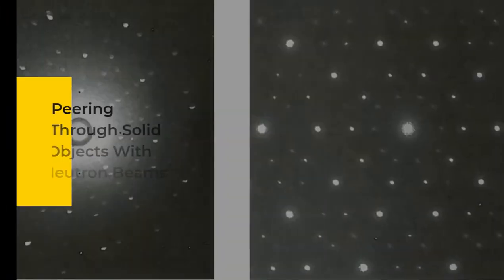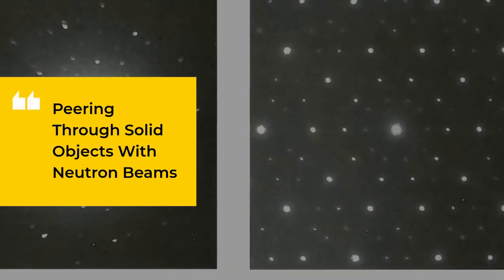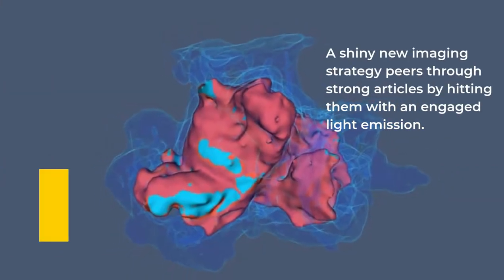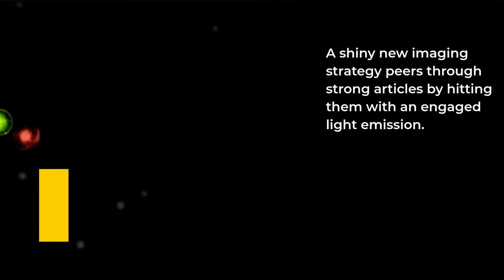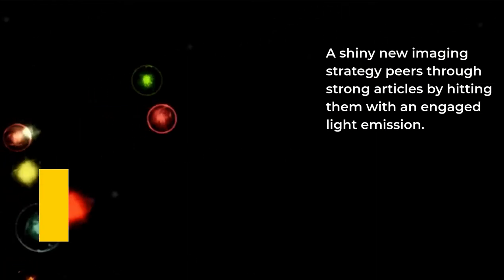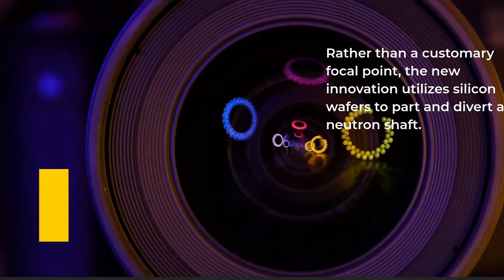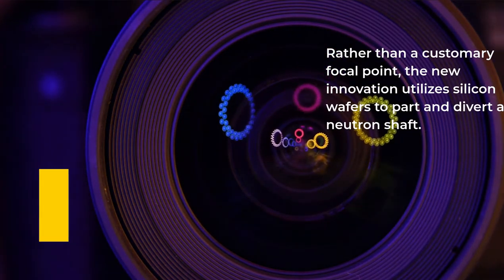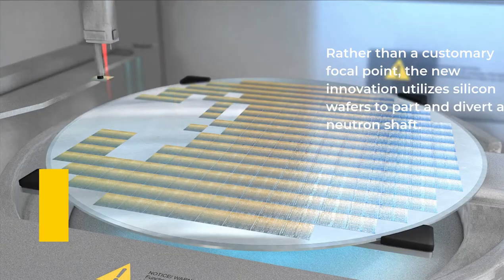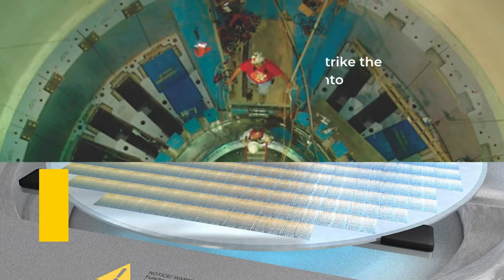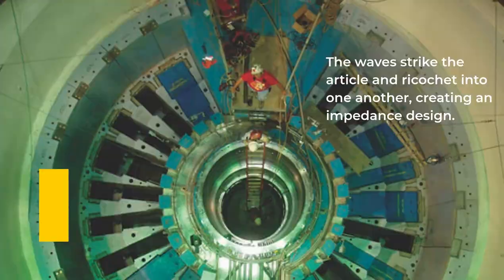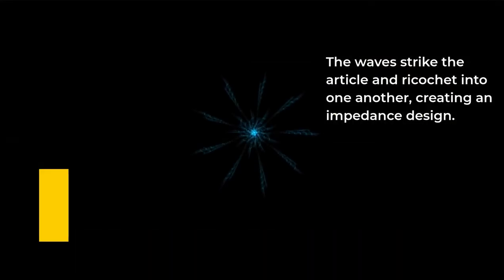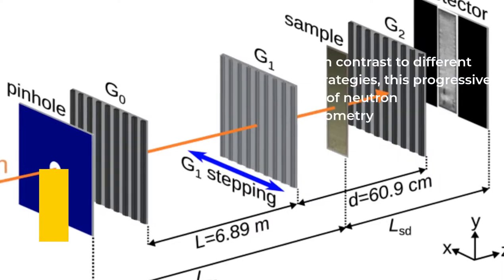8. Peering Through Solid Objects With Neutron Beams. A brand new imaging strategy peers through solid objects by hitting them with a focused light beam. Rather than a traditional lens, the new technology uses silicon wafers to split and redirect a neutron beam. The waves strike the object and bounce into one another, creating an interference pattern.